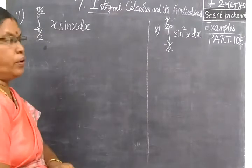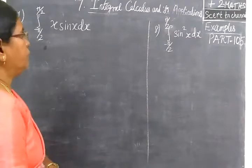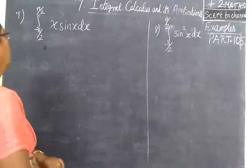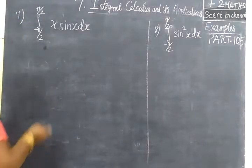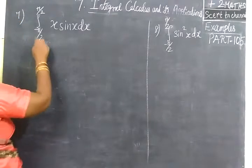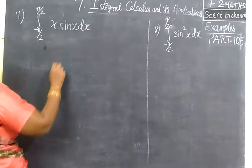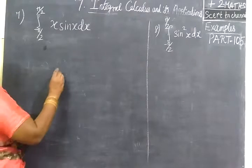Now we see part 1 out of 5: the integral from minus 5π/2 to 5π/2 of x·sin(x) dx.